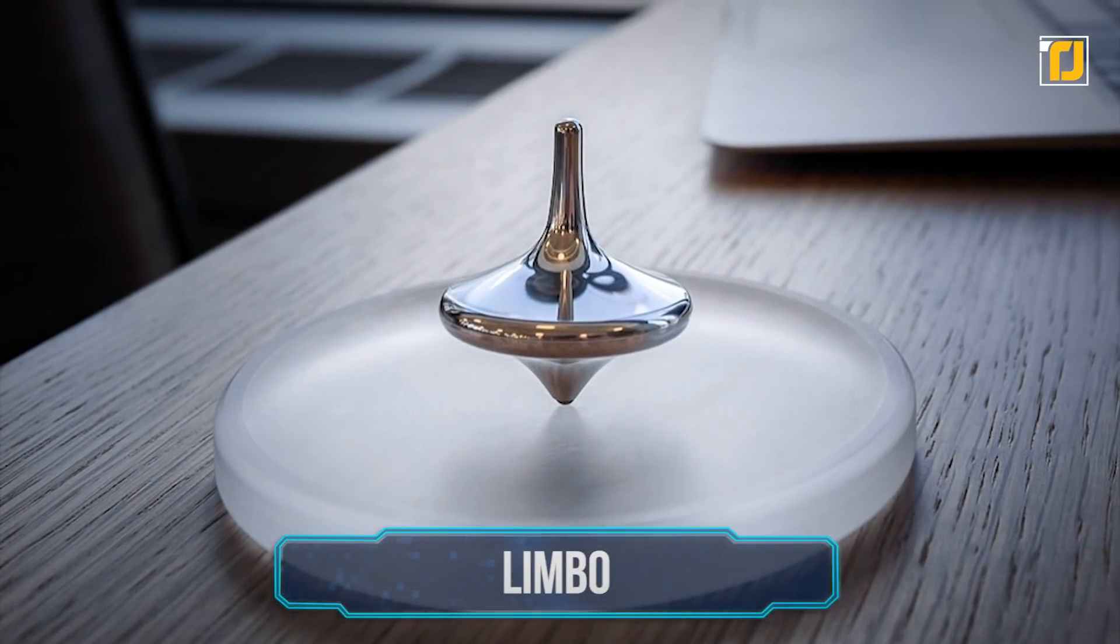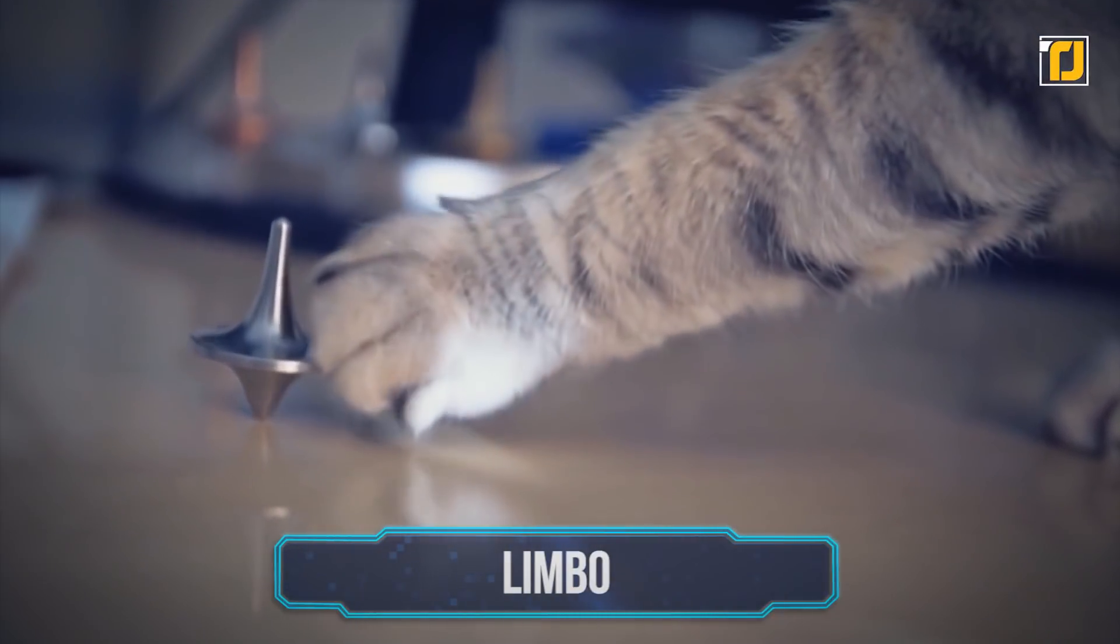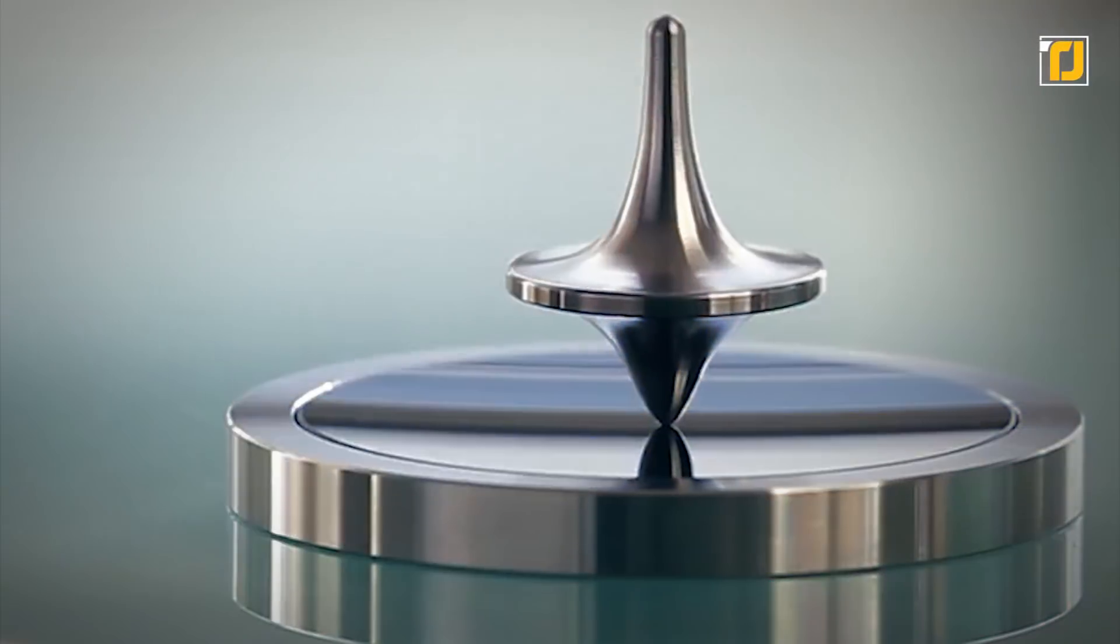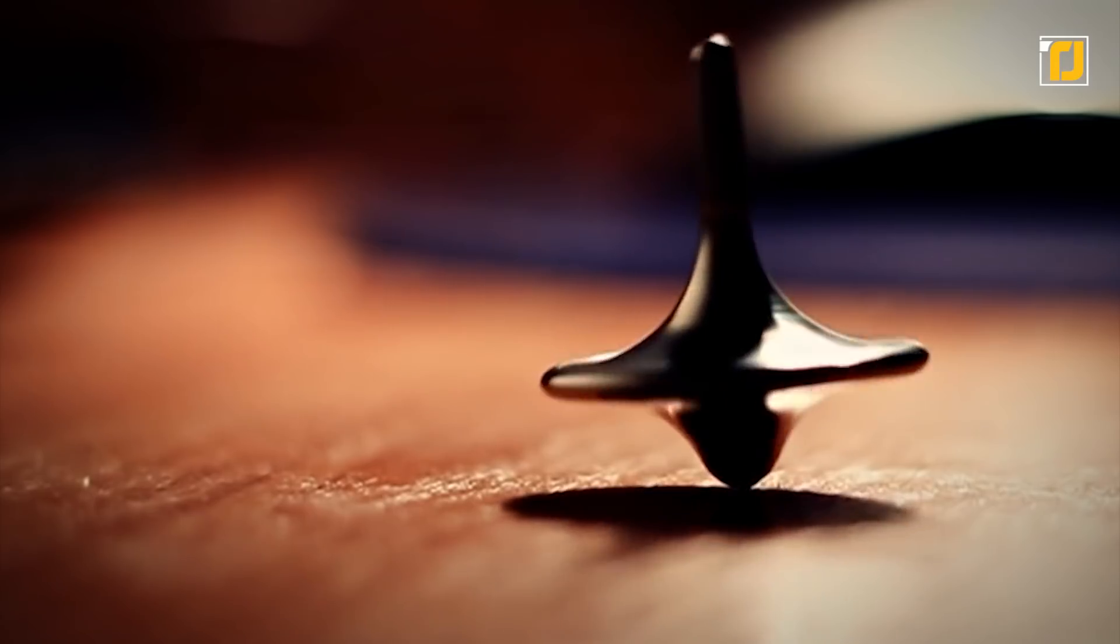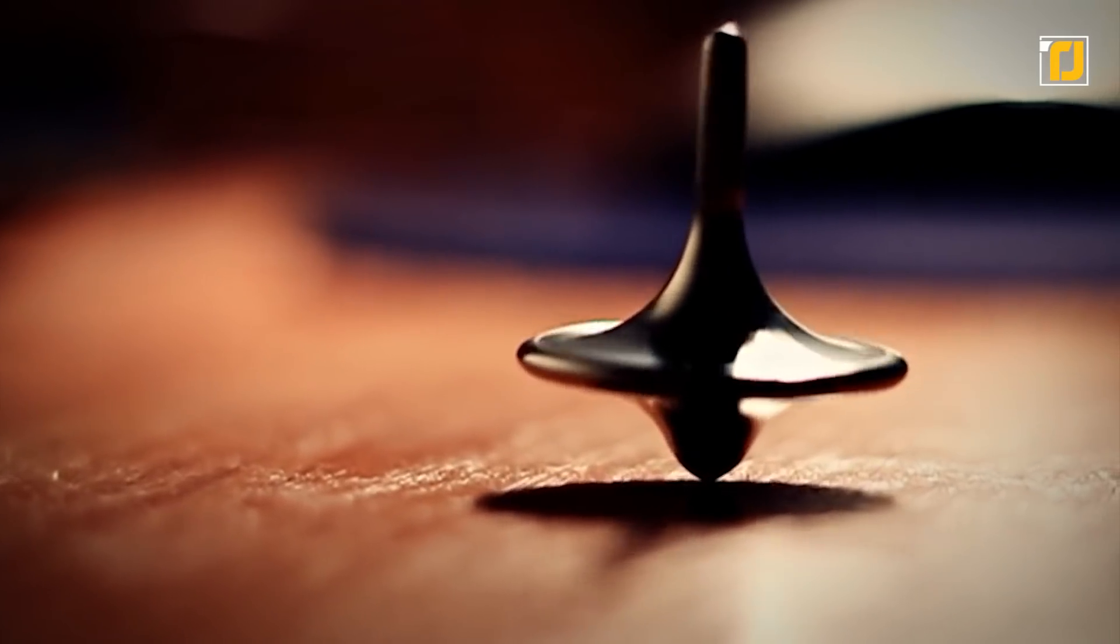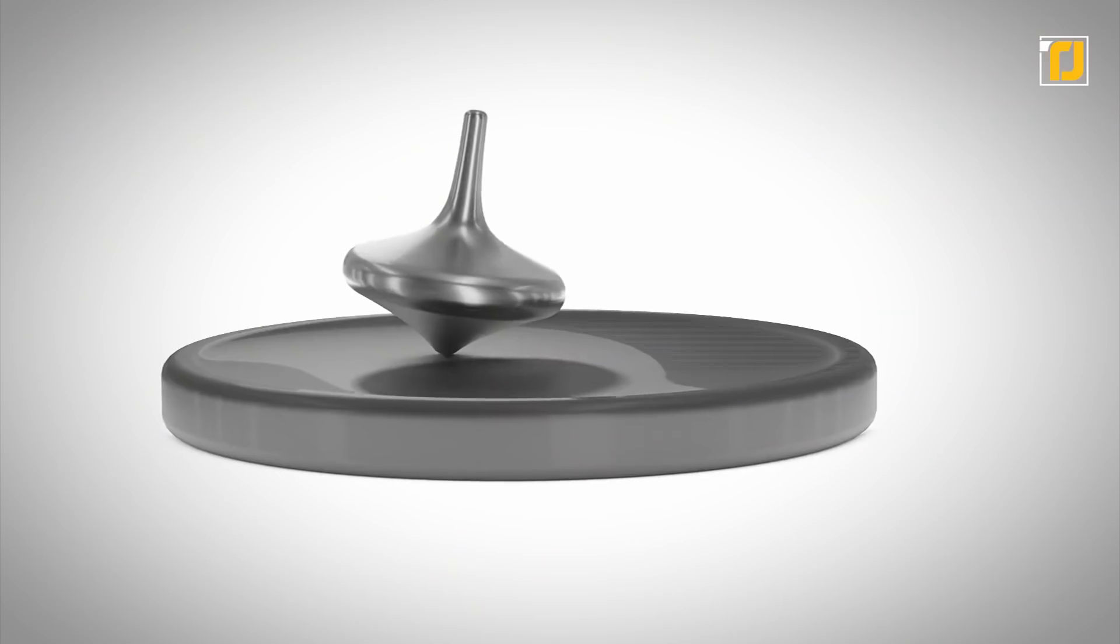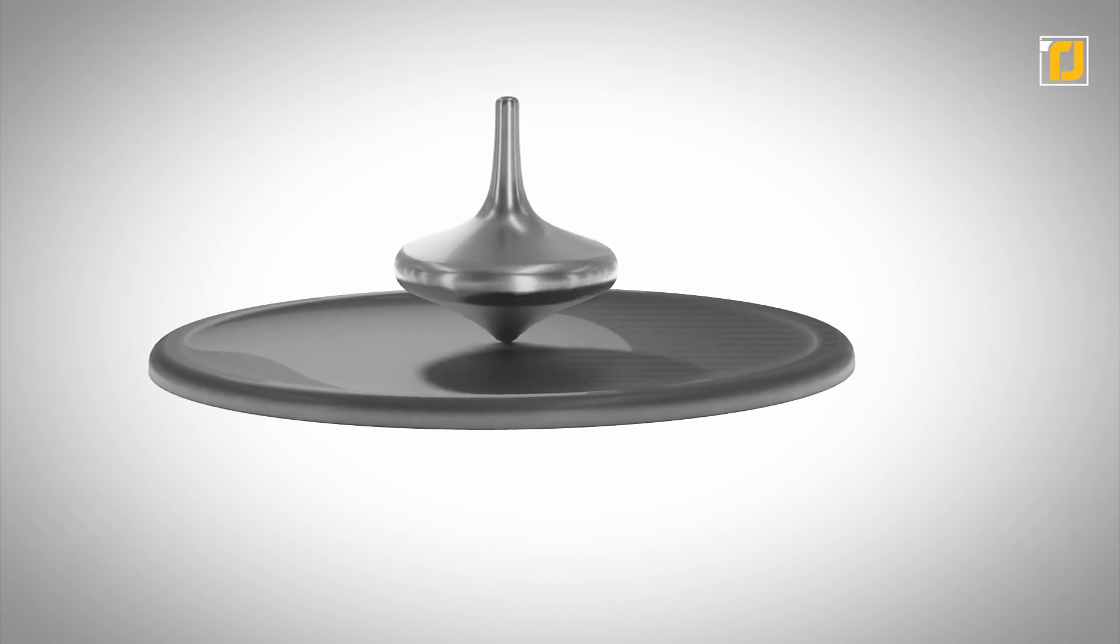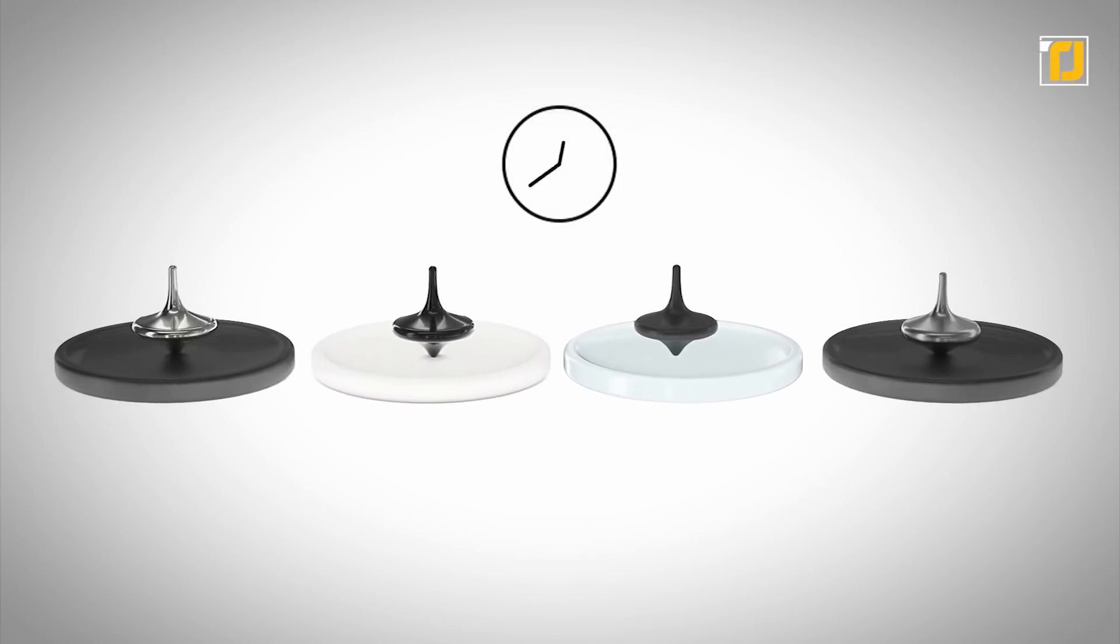Number 6. Limbo. As kids, the most annoying thing was when tops stopped rotating and we had to spin them again. The fun lasted only a few minutes, which isn't great. But the Limbo might just be the thing your younger selves wanted. The Limbo holds the world record for the longest spinning time ever, an astonishing 27 hours. It comes with a spinning platform that maximizes its spin time, and it spins just fine, even when it isn't charged.